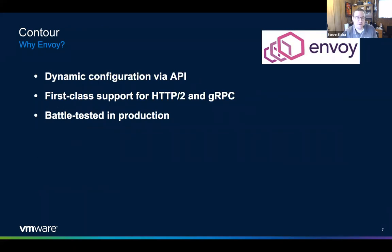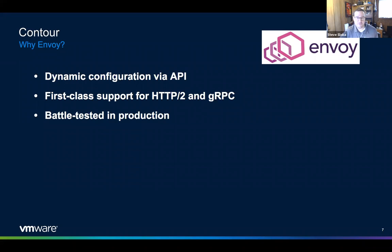Why did we choose Envoy when building Contour? Envoy provides dynamic configuration via an API — it exposes a gRPC endpoint using their XDS protocol. Contour is the XDS server for Envoy and streams configuration changes through that gRPC connection, so there's no need to reload Envoy for changes to take effect. Envoy also provides first-class support for HTTP/2 and gRPC, and it's battle-tested in production — it came out of the engineers at Lyft and has become a well-known component in lots of architectures today.